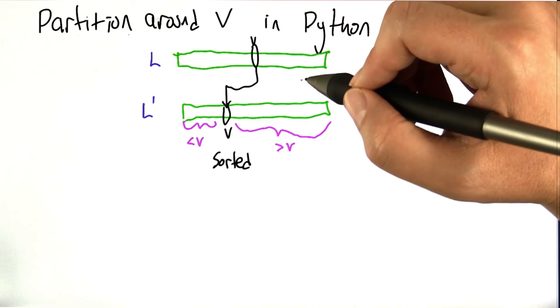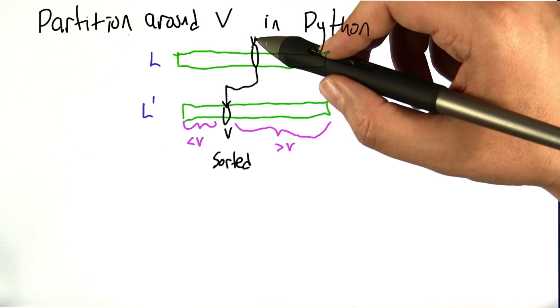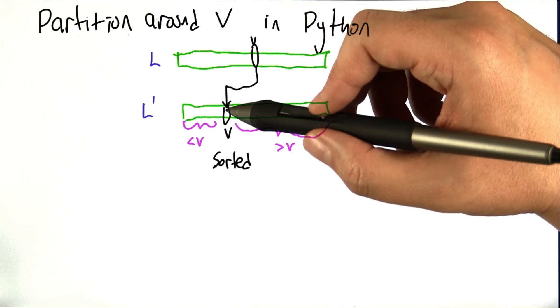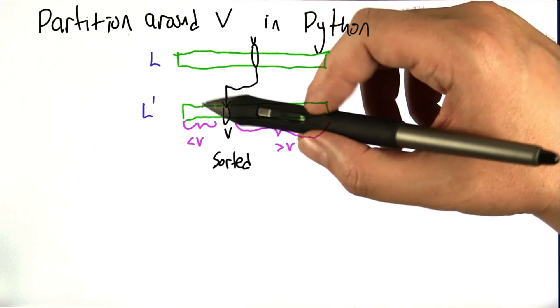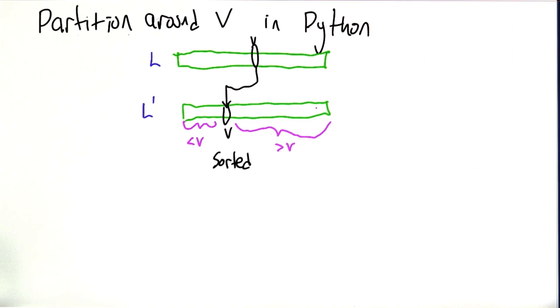So what I'd like you to do is modify the Python code that we're just looking at to take a list, L, and a value, v, and return a new list, L', that has the property that v is in its final sorted place, everything to the left of it is to the left of it, and everything to the right of it is to the right of it.